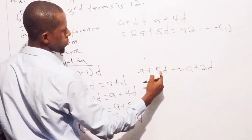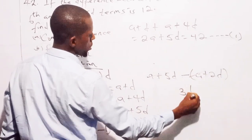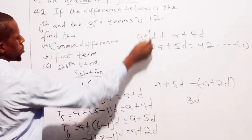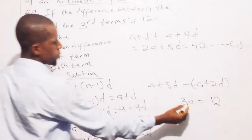This A cancels. So 5D minus 2D, we're having 3D. So 3D is 12, equals to 12. So I can easily find my D. So by dividing both sides by 3, so I'm having D to be 4.